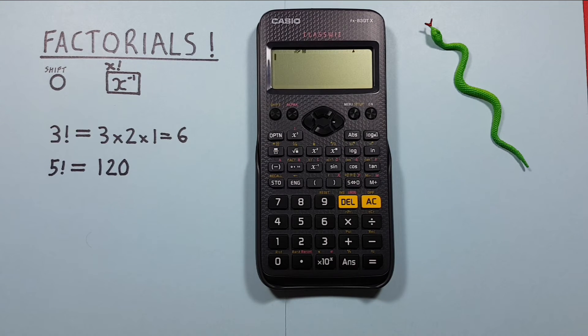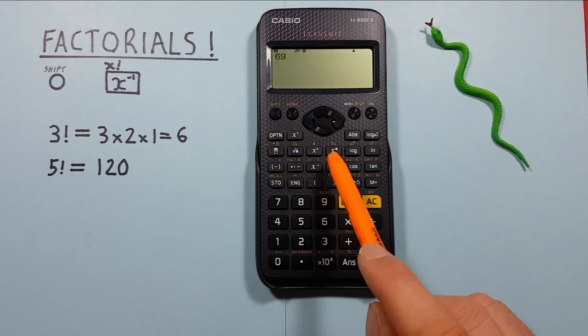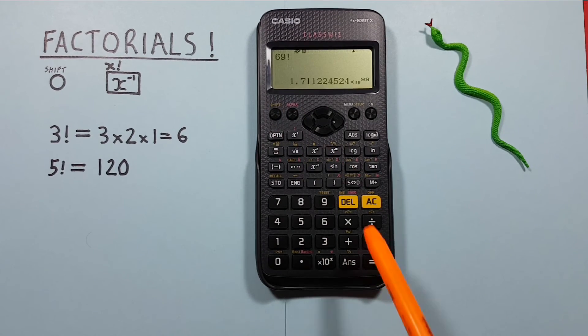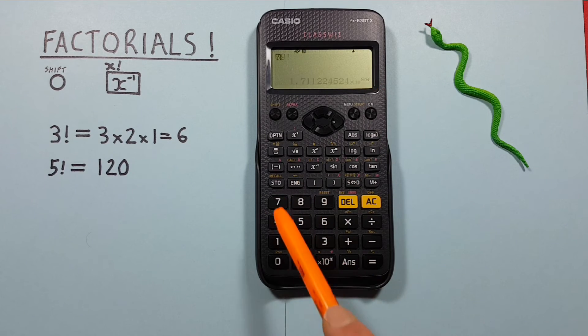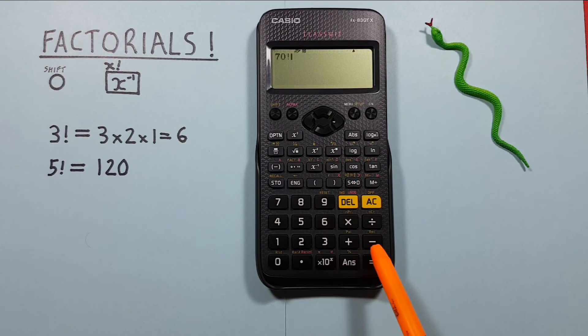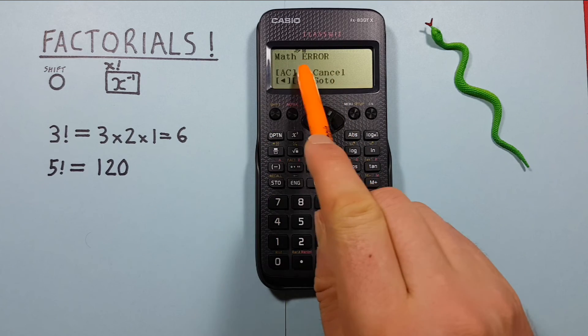The largest factorial that this calculator can do is actually 69 factorial which will give us a result. While 70 factorial gives us the error. So if you're getting that error that might be the problem.